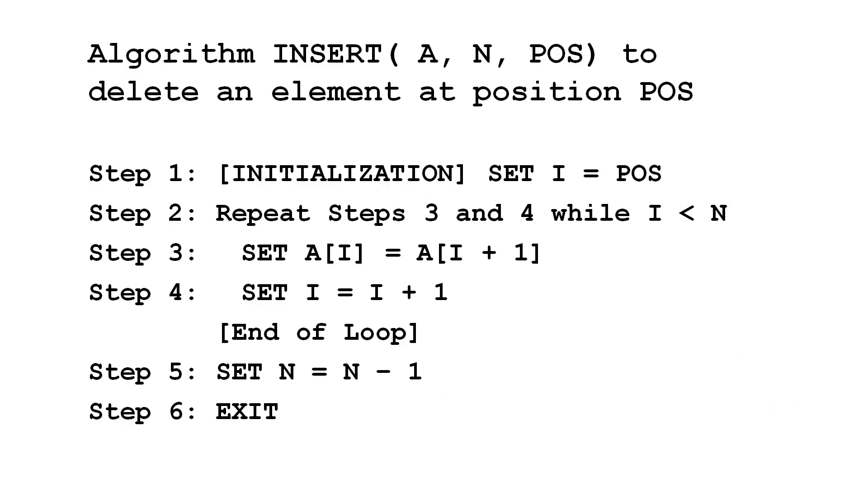In the loop, we write the element present to the right of pos to the element present at pos. This is what should be done to shift, right? Now we increment the counter, and when the loop is finished, we just have to decrement the size of array by 1 and end the program.